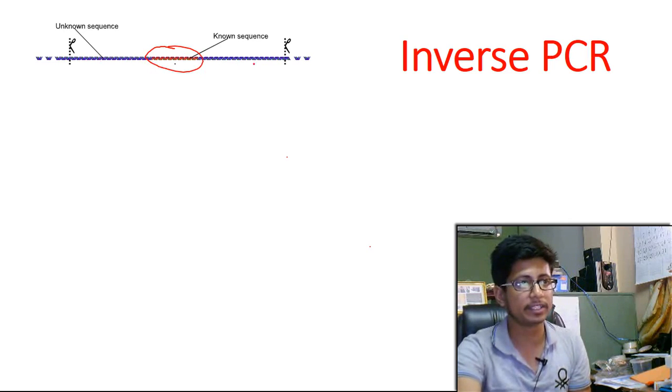Now as the flanking region sequences are not known we cannot make any primer based on that. So what is the way to make primer? Without the primer we cannot amplify the DNA. So the best option here is to join the terminal region of this linear DNA and make a circle and then cleave the DNA from the known region. How it will work? Let's look at it.